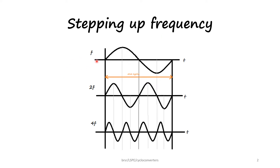For understanding stepping up frequency, let us see this picture again. In the first waveform we see that there is one cycle of waveform in a period of time T. If we take that as F, in the next one we see that in the same time period we have two cycles — this is twice the frequency. In the next one, in the same time period we have four cycles, which is four times the frequency. This is called stepping up.